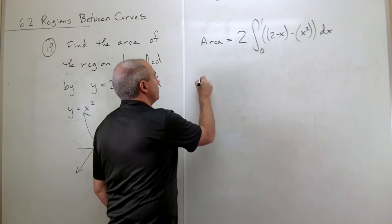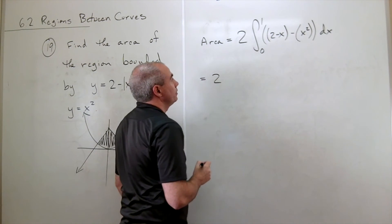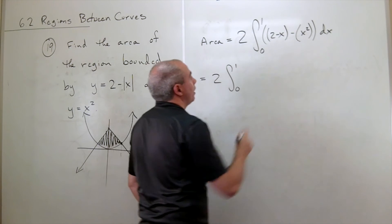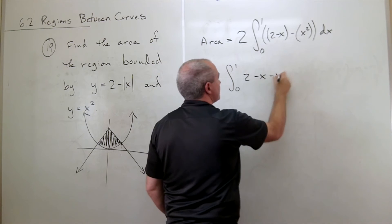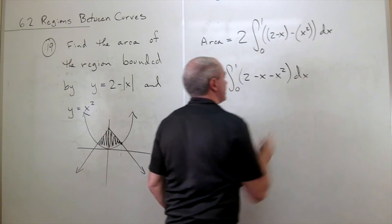Let's rewrite it. We've still got the 2. We've got integral from 0 to 1 of 2 minus x minus x squared dx.